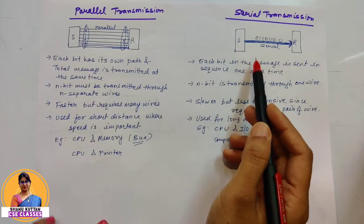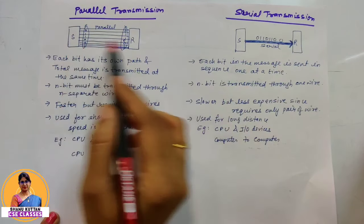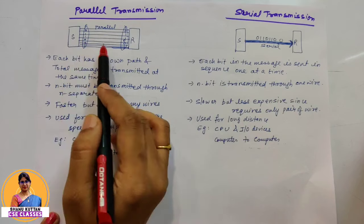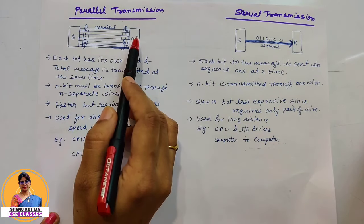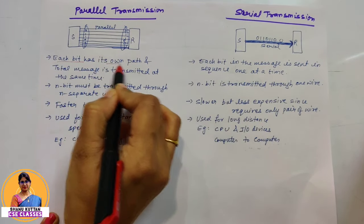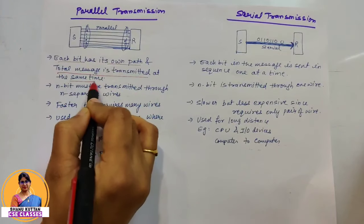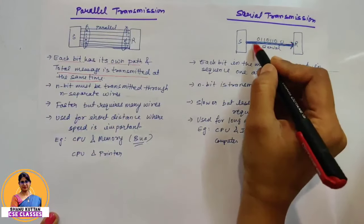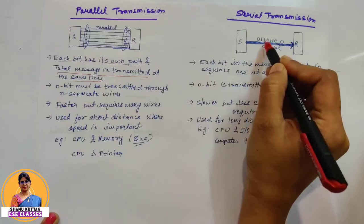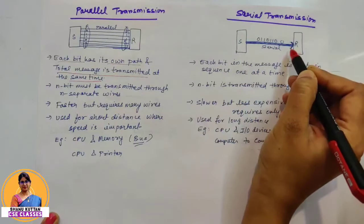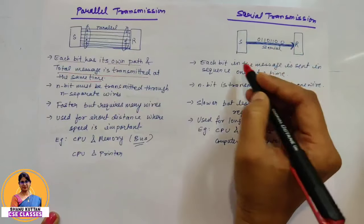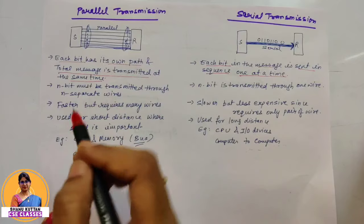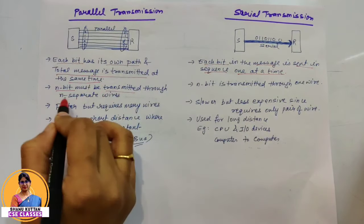The difference between parallel transmission and serial transmission. In parallel transmission, there is a sender and a receiver with multiple lines. The number of lines equals the number of bits being transferred. Each bit travels on an individual line simultaneously, so each bit has its own path and the total message is transmitted at the same time. In parallel transmission, N bits are transmitted over N separate wires.